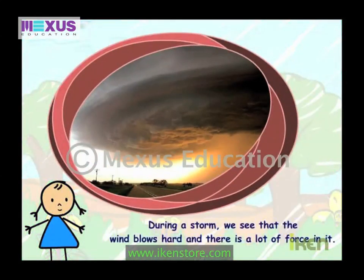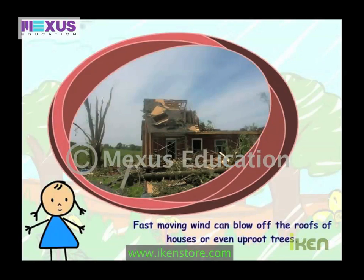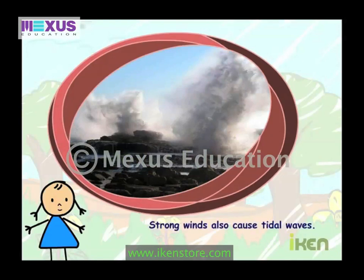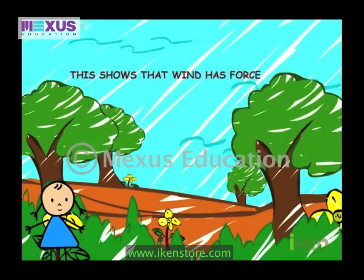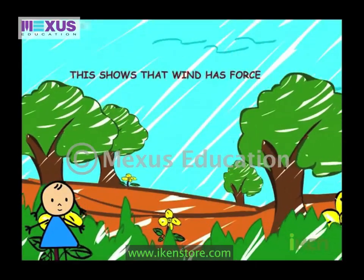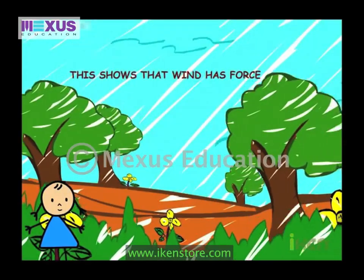During a storm, we see that the wind blows hard and there is a lot of force in it. Fast-moving wind can blow off the roofs of houses or even uproot trees. Strong winds also cause tidal waves. This shows that wind has force.